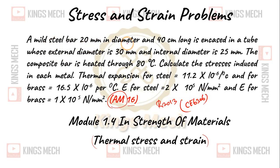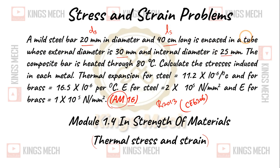A mild steel bar 20 mm in diameter and 40 cm long is encased in a tube whose external diameter is 30 mm and internal diameter is 25 mm. The composite bar is heated through 80 degrees Celsius.